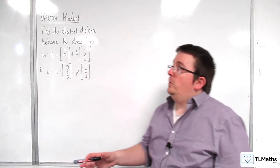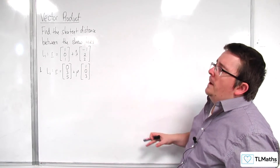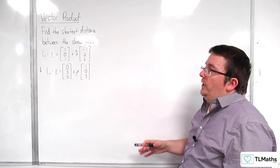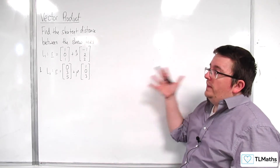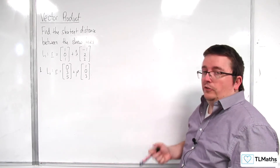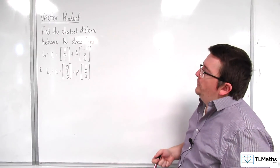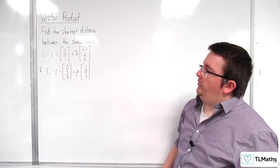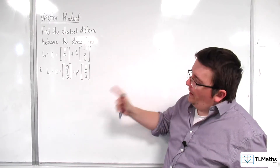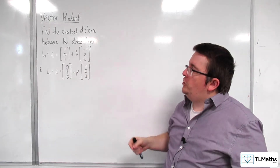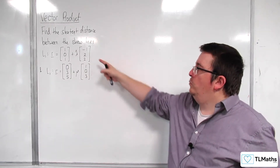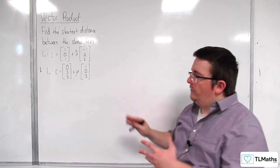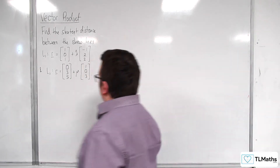In this video we're going to explore how to find the shortest distance between two skew lines. We've got L1 and L2 here — they're not parallel, they've got different direction vectors, one's not a multiple of the other, so they're definitely skew lines.